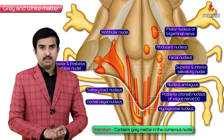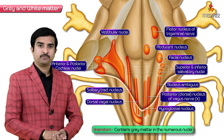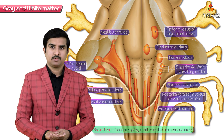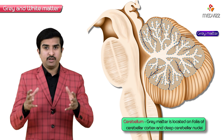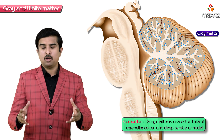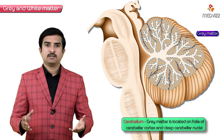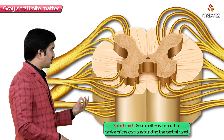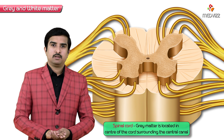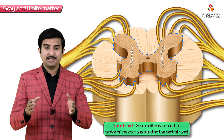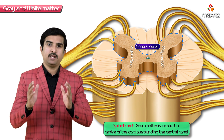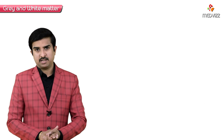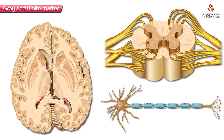In the brainstem, gray matter is found in numerous nuclei. In the cerebellum, gray matter is located on the folia of the cerebellar cortex and in the deep cerebellar nuclei. In the spinal cord, the gray matter is located in the center of the cord, surrounding the central canal.